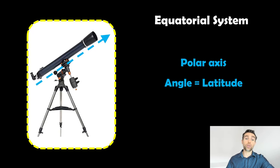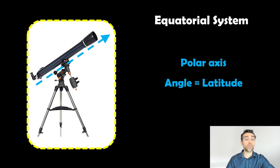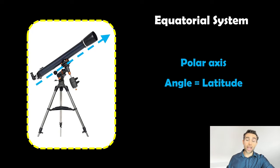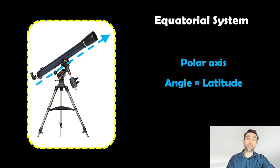What you want instead for long-term tracking is an equatorial mount or equatorial coordinate system. Here you align to the polar axis, and the angle for the polar axis is essentially the latitude. For example, in the UK we're just over 50 degrees latitude, so I position the angle of the telescope so it's pointing at Polaris, the North Star, and the angle correlates to the latitude. As you get down to latitudes closer to the equator the telescope points quite differently, and at the Pole it would be pointing straight up, since that's the rotation axis of the Earth — the polar axis.